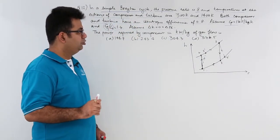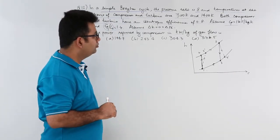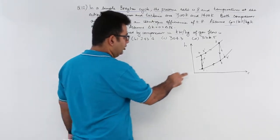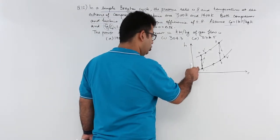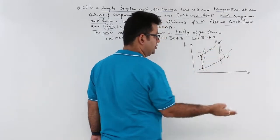Now if you look at the diagram and try to plot the values given to you, 1 to 2 is the ideal compression, 1 to 2 prime is the actual compression, then 2 prime to 3 prime is the heat addition.